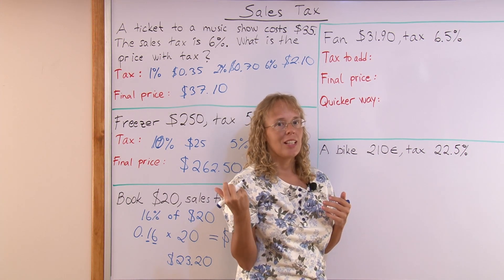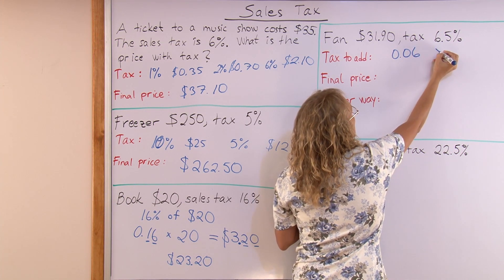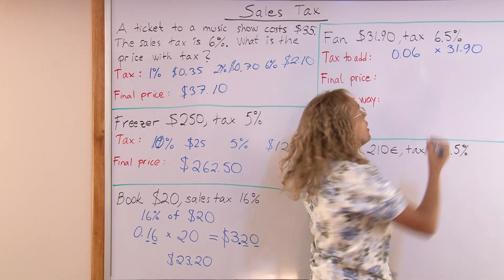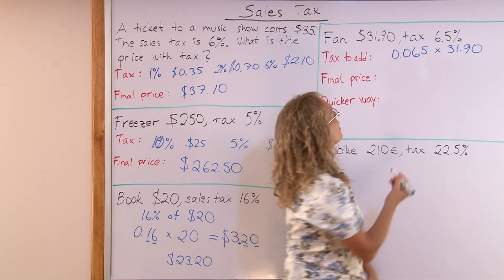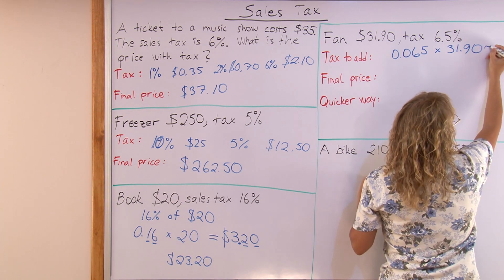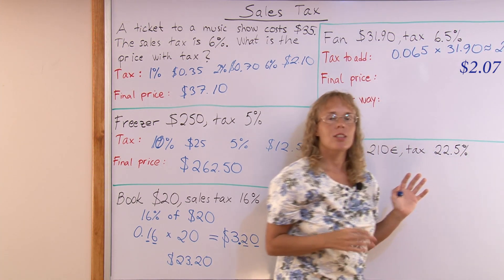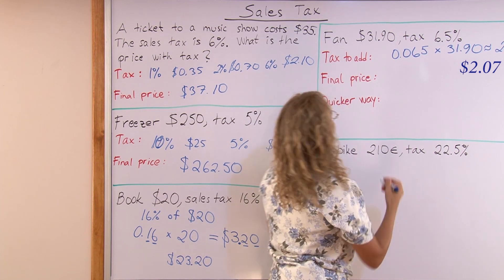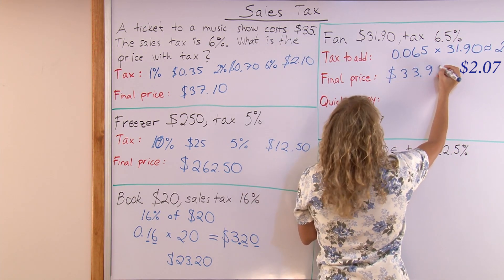If it was only 6%, I would have 0.06 as a decimal times that number. But since I have 6.5%, I will just add this 5 here. My decimal is now 0.065, and that is the same as 6.5%. So that is the tax to add once you calculate it. I have calculated it beforehand and the answer is about $2.07 — I say 'about' because it has to be rounded to the nearest cent. The final price: we add $31.90 and $2.07 to get $33.97.